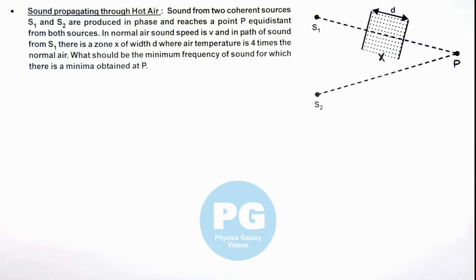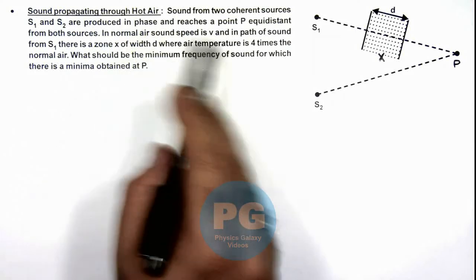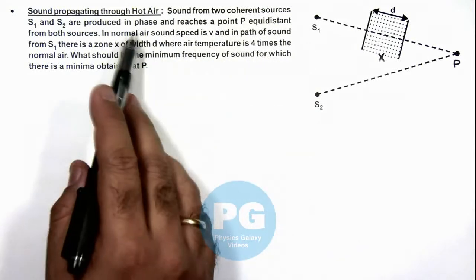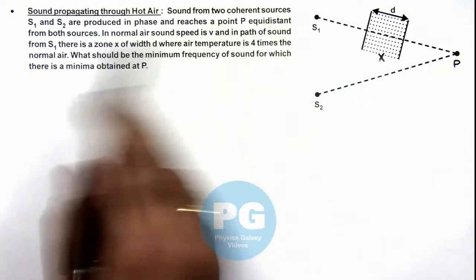In this illustration we'll discuss sound propagating through hot air. We are given that sound from 2 coherent sources S₁ and S₂ are produced in phase and reaches a point P which is equidistant from both sources.